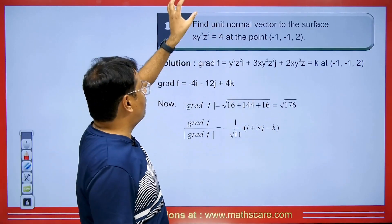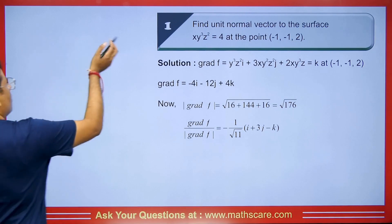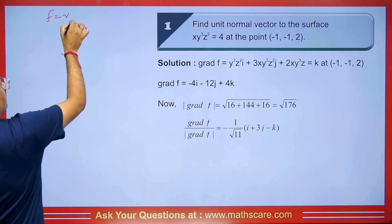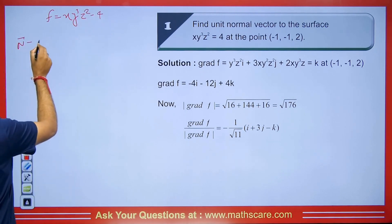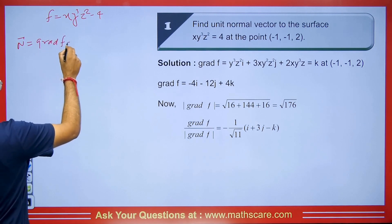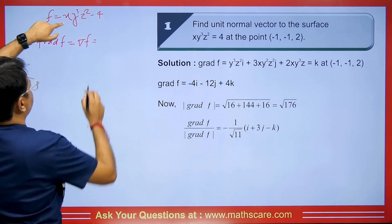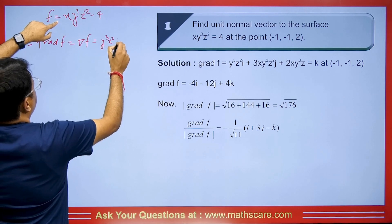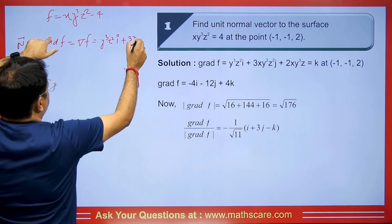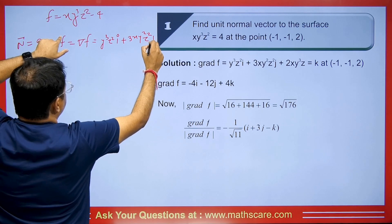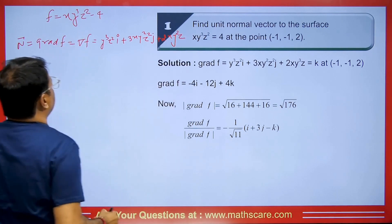In the next question, we are asked to find the unit normal vector of a surface at a given point. We assume the surface as f, so f = xy³z² − 4. First we find its normal vector by computing the gradient of f: derivative with respect to x gives y³z²·i, with respect to y gives 3xy²z²·j, and with respect to z gives 2xy³z·k.